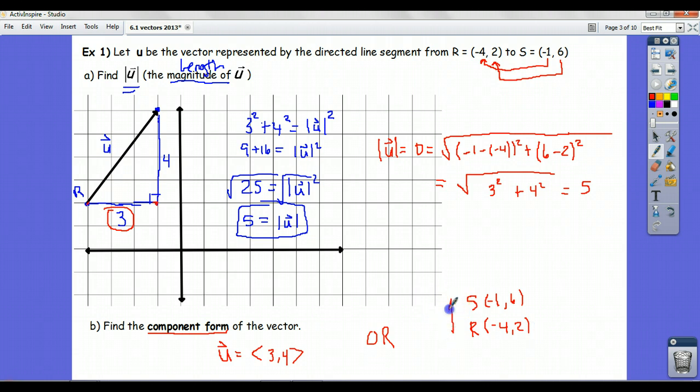s is where the arrowhead is. And if you subtract these points in this way, it's another way of getting component form. -1 minus -4 is -1 plus 4, which is 3. And 6 minus 2 is 4.